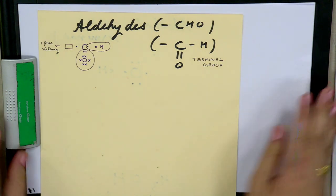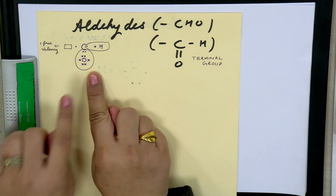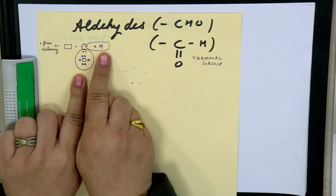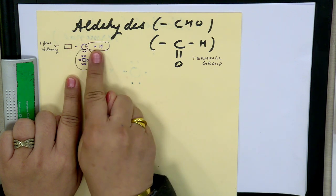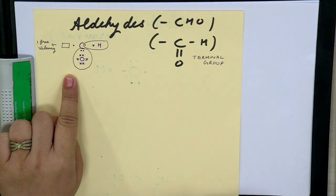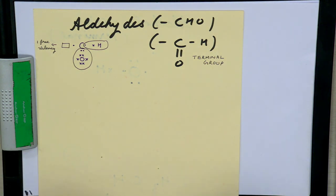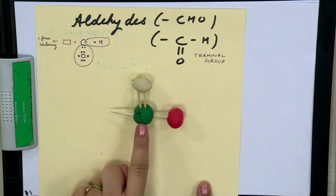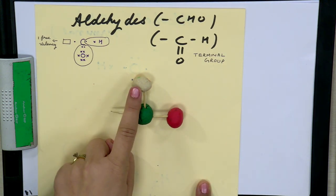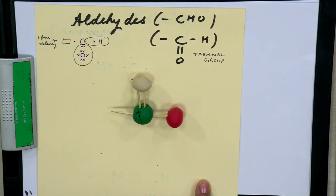Aldehyde is C double bond O-H. It is a terminal group — as you can see in the electron dot structure, there is one free valency. Hydrogen has shared one electron, oxygen has shared two electrons, and carbon's valency is still not complete, leaving one free valency. In three dimensions, this is the real structure of the aldehyde group. We are representing it here using clay models instead of ball-and-stick models.